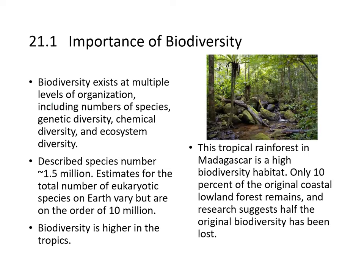So, importance of biodiversity. Biodiversity exists at multiple levels of organization, and that includes number of species, genetic diversity, chemical diversity, and ecosystem diversity. The described number of species in the world numbers about 1.5 million. The estimated total number of eukaryotic species on Earth varies, but we think it's in the order of something like 10 million, and biodiversity tends to be higher in the tropics.